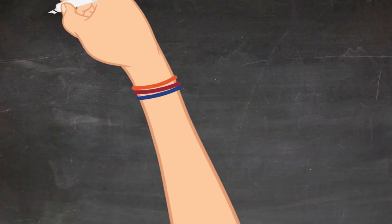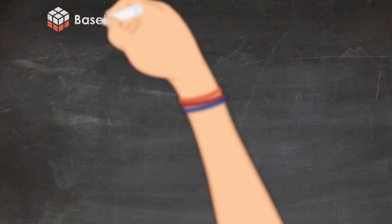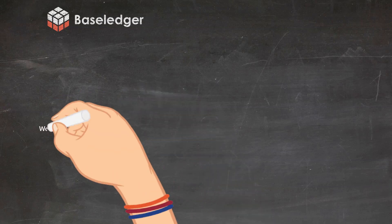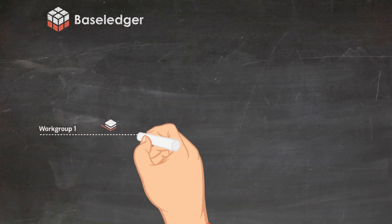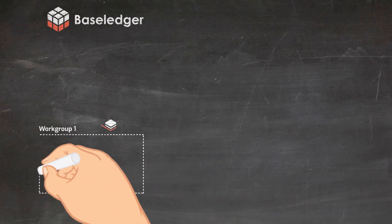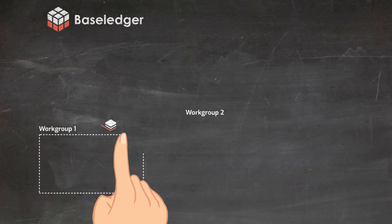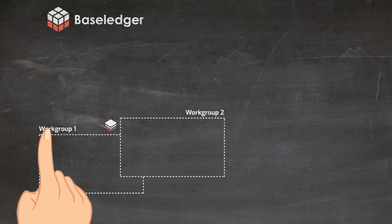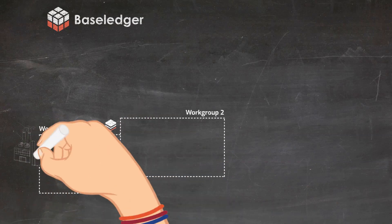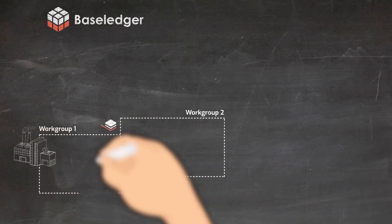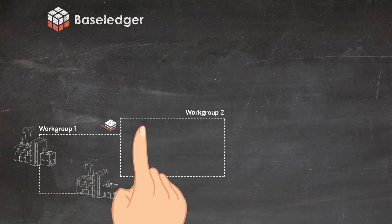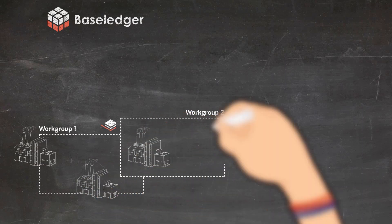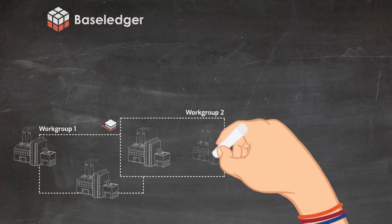So let's take a look at what Baseledger actually is, and we start with Baseline. Baseline is a protocol, a pattern, a technique for different participants to synchronize their business processes. Let's think of two different workgroups, both consisting of different enterprise organizations doing business by exchanging business objects, for example purchase orders or delivery notifications.